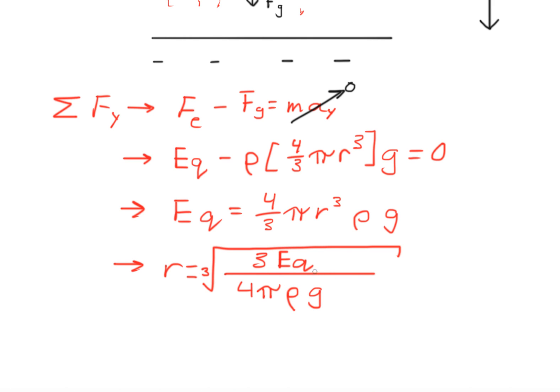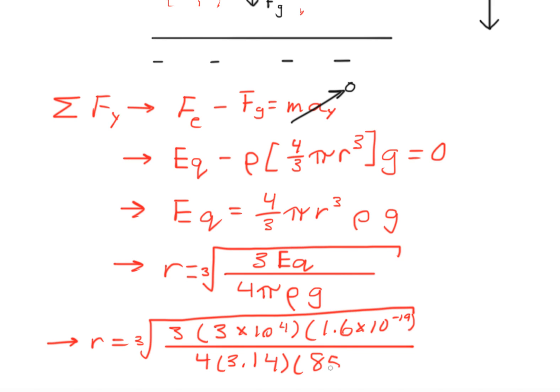When we plug in the numbers, we get that r equals the cube root of 3 × 3 × 10⁴ × 1.6 × 10⁻¹⁹ all divided by 4 × 3.14 × 858 × 9.8. So this here is the electric field, this is the charge of the particle.